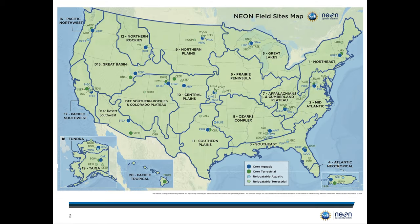NEON has separated the conterminous 48 states, Alaska, Hawaii, and Puerto Rico into 20 different ecoclimatic domains. This was done using a multivariate clustering analysis of such factors as incoming precipitation, average annual air temperature, and other ecologically important factors. After distinguishing this area into 20 different domains, we found the locations for each field site that best represents the variety of climate and ecology that can take place in those domains.